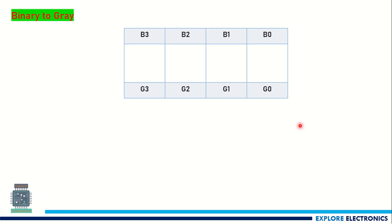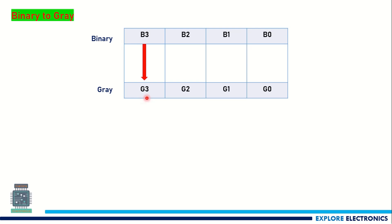Now let us convert binary to gray. Here I have taken this as binary and this as gray code. B3 corresponds to MSB and B0 corresponds to LSB. Similarly in gray code, G3 is MSB and G0 is LSB. While converting binary to gray, we need to start with MSB. The MSB bit G3 will be the same as B3.